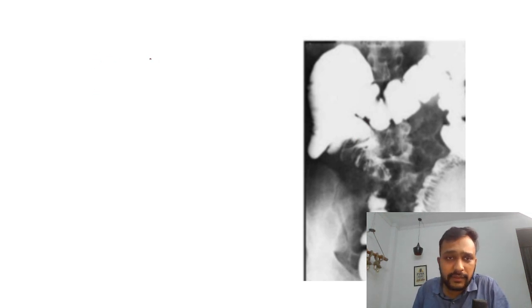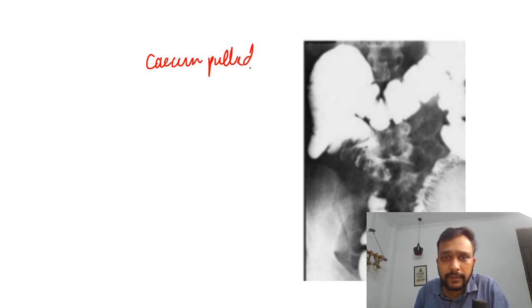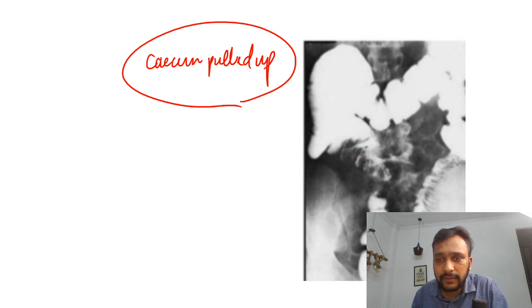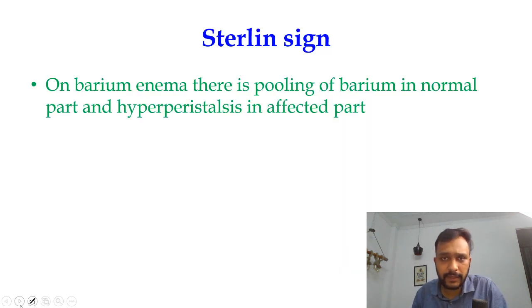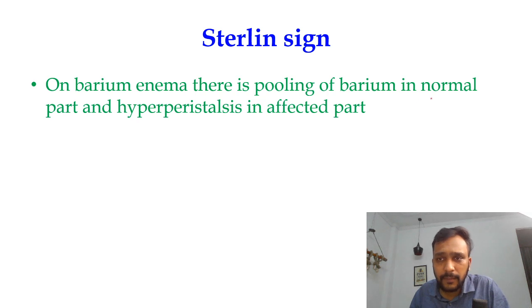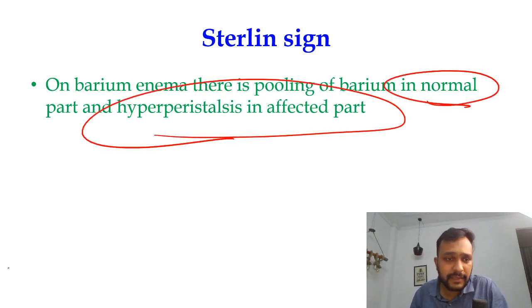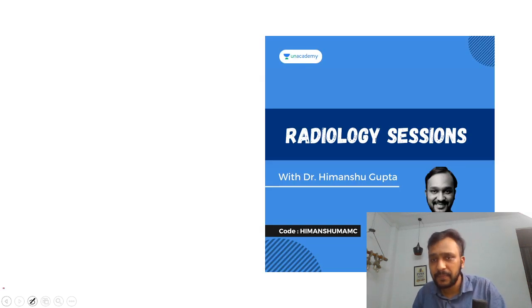In this barium meal follow-through image, you can see that the cecum is pulled up and the ileocecal angle is widened, giving the gooseneck deformity. Sterling sign refers to pooling of barium in a normal part and hyperperistalsis in the affected part.